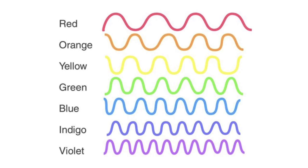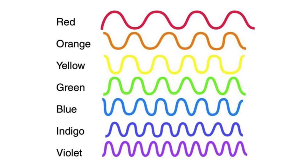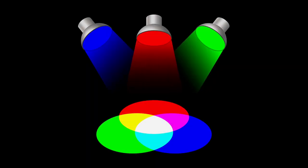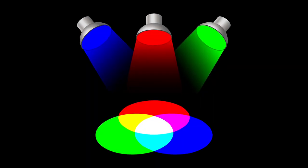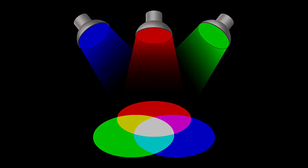To understand how CRI is measured and how to interpret it, let's dive into some context about light and color. As we discussed in our video about color temperature, visible light exists along a spectrum from red to violet, with all the colors of the rainbow in between. White light is actually a combination of light of all colors along the visible spectrum.